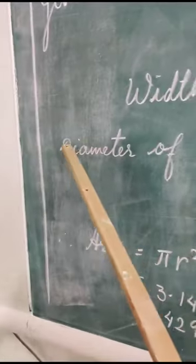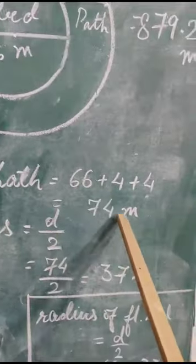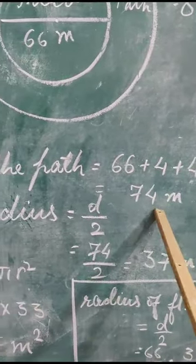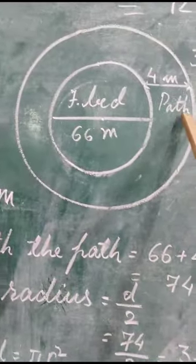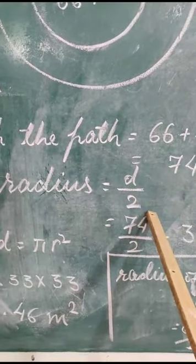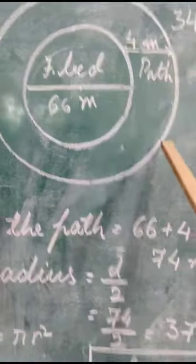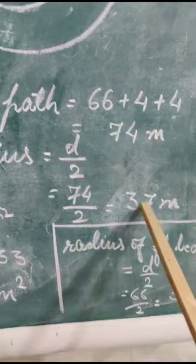Okay? It is written there—diameter of the flower bed along with the path is equal to 74 meters. And now, you know the diameter, so you can find out the radius also by dividing it by 2. So the radius of this big circle will be 37 meters.